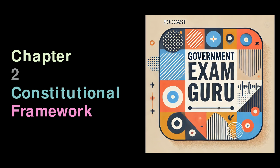Things changed dramatically after the Sepoy Mutiny in 1857, a major uprising against British rule. As a result of this rebellion, in 1858, the British Crown took direct control of India. This period of rule continued until India gained independence on 15 August 1947.